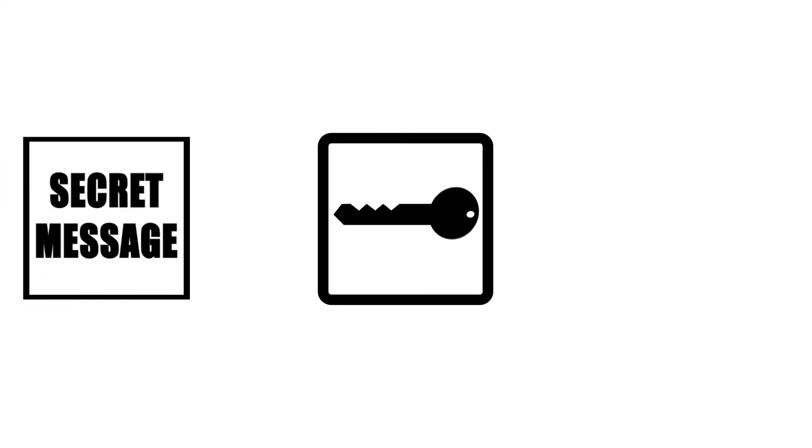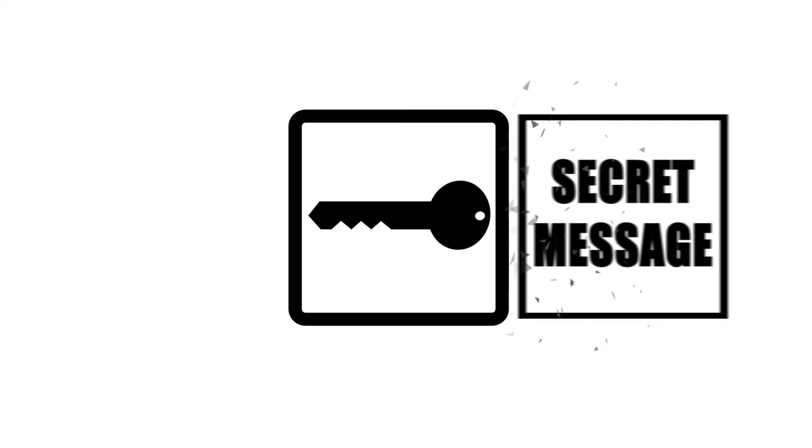In the last video, we explained symmetric encryption and public key encryption. With symmetric encryption, the same key was used to encrypt and to decrypt. A plain text is encrypted using an encryption key, and it becomes a cipher text. The cipher text is then sent, and it is unreadable if it is intercepted. Once it reaches its recipient, it is decrypted using the same encryption key, converted back to a plain text, and then read.